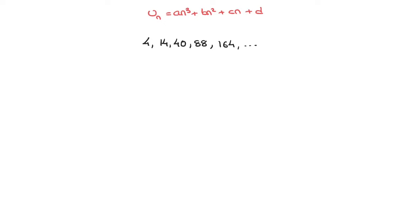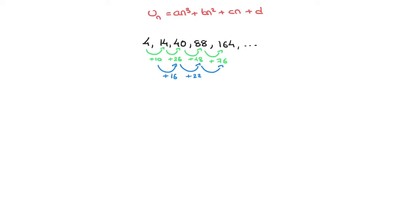The first thing we do is look at the difference between consecutive terms of the sequence. From 4 to 14 we're adding 10; from 14 to 40 we're adding 26; from 40 to 88 we're adding 48; from 88 to 164 we're adding 76. Since those differences keep changing, we look at the second differences: from 10 to 26 we're adding 16; from 26 to 48 we're adding 22; and from 48 to 76 we're adding 28.